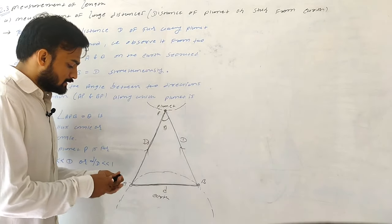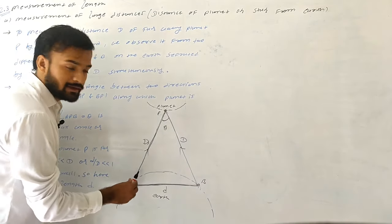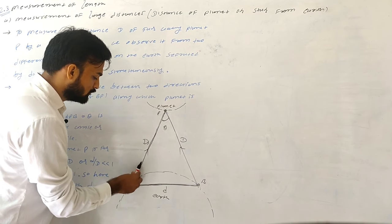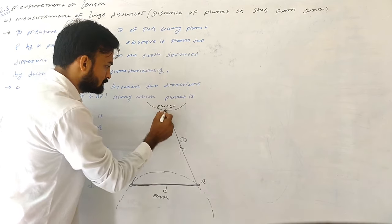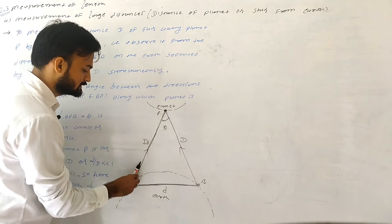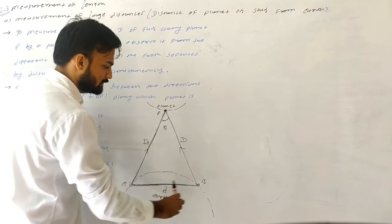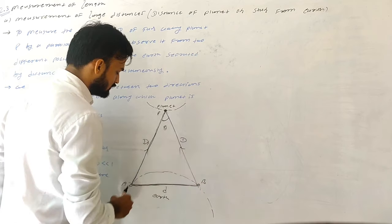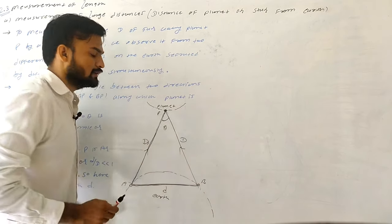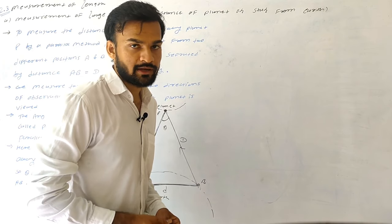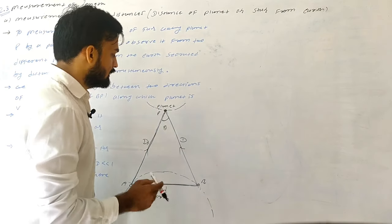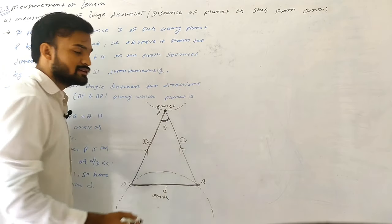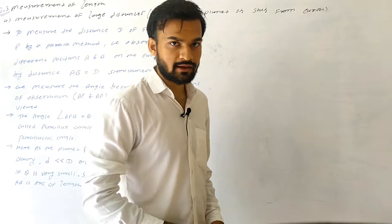From point A, we focus a telescope at the planet in one direction, and at the same time we focus another telescope from point B in its direction. So AP and BP are the directions of observation along which planet P is viewed, and the angle between these two directions is known as the parallax angle theta.